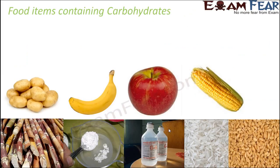Some examples of food items which contain carbohydrates — or which are a rich source of carbohydrates — are potatoes, banana, apple, corn, wheat, rice, sugarcane, and glucose. Now this is something I am telling you: that potato is a rich source of carbohydrates. But how do you prove that yes, potato actually contains carbohydrates?